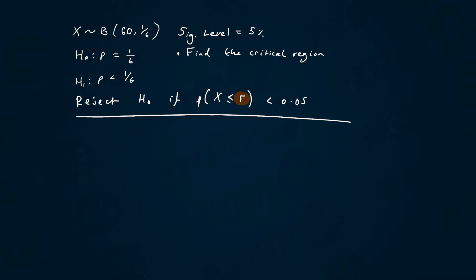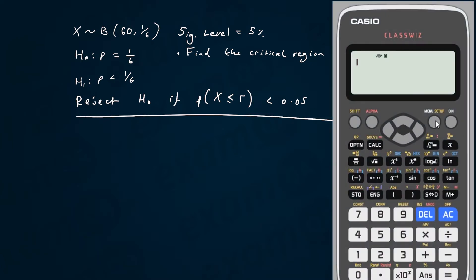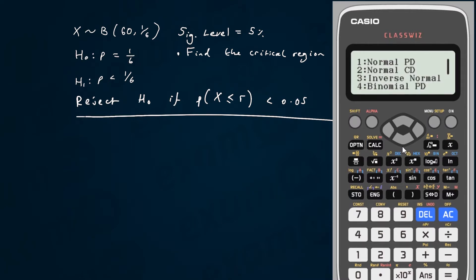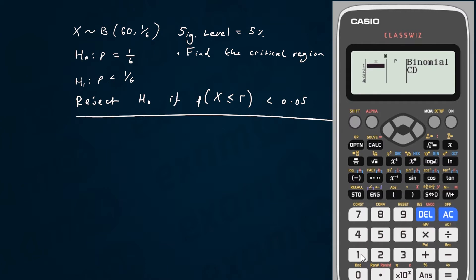Our objective is to work out what r is — the value such that getting less than or equal to it gives a probability just less than 0.05. Instead of trial and error, we go to the calculator: menu, 7, then binomial CD, then list.